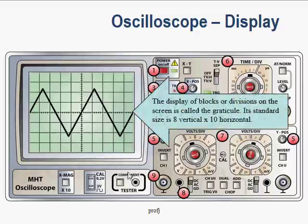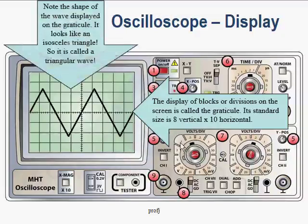The standard size of a graticule is 8 vertical blocks by 10 horizontal blocks. Any other combination of blocks will not give a standard graticule. You will note that this waveform shown on the display looks like an isosceles triangle, and so it is aptly called a triangular wave.